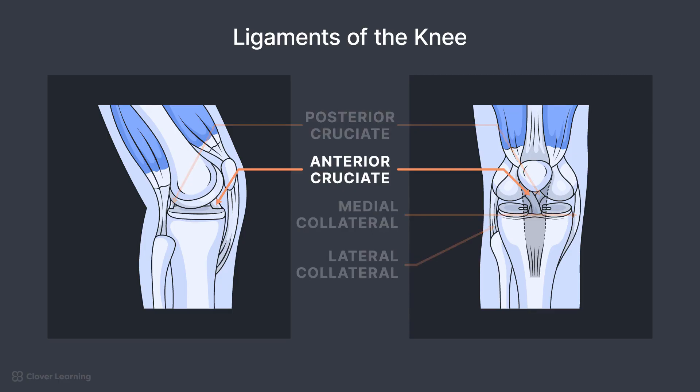The anterior cruciate, or ACL, runs diagonally within the knee and prevents excessive forward movement of the tibia relative to the femur. The posterior cruciate, or PCL, crosses behind the ACL and prevents excessive backward movement of the tibia relative to the femur.